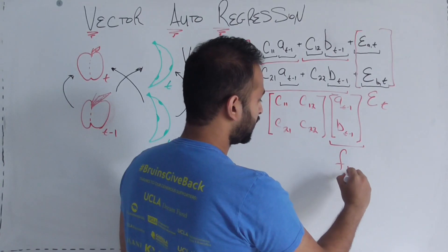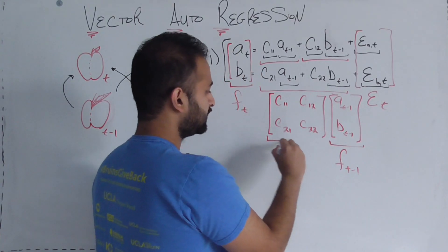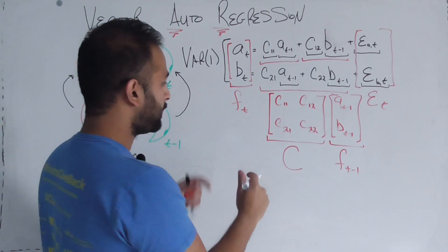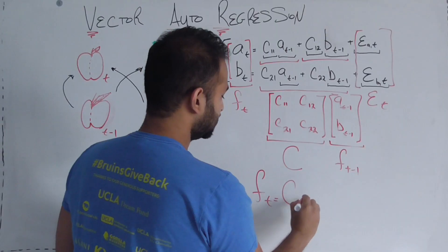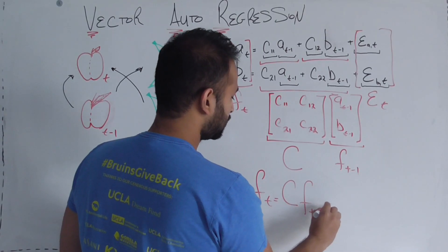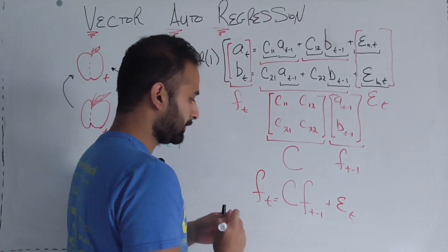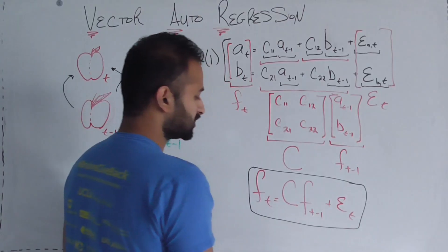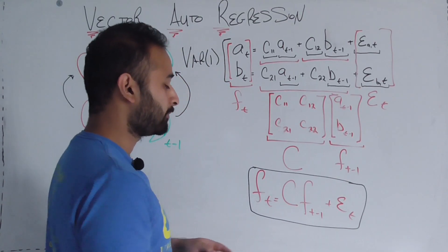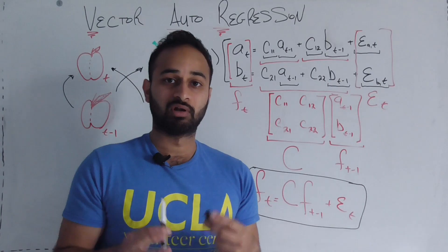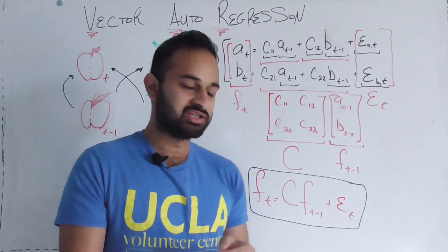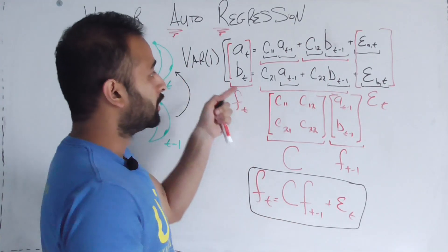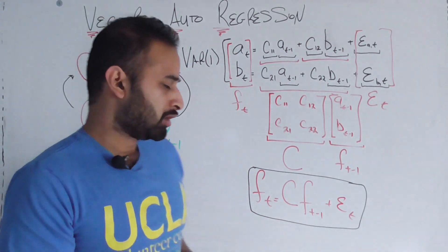What is a t minus 1, b t minus 1 as a vector? It's the same looking vector as this, it's just one time period in the past. Therefore this is just the fruit vector from one time period in the past. This matrix we'll just call c because it's full of these little c components. So in a nice compact form, we get that f of t equals c times f of t minus 1 plus epsilon t. That is the formulation of a VAR(1) model.